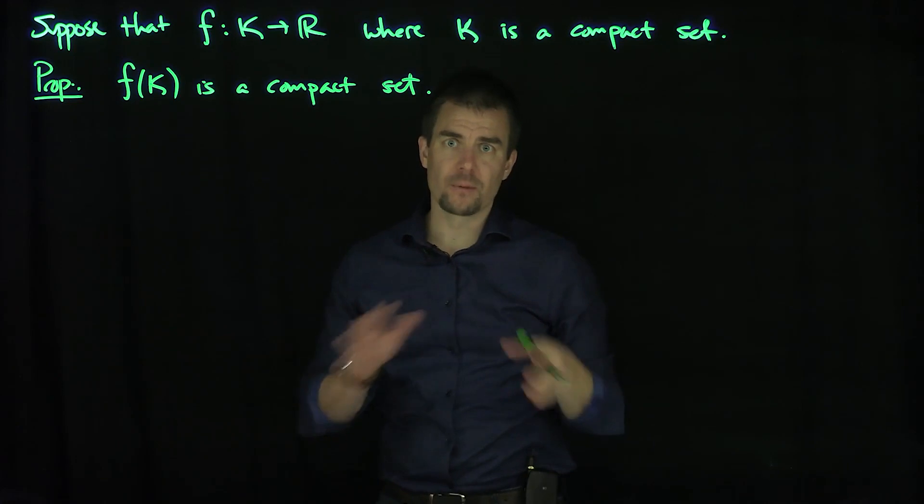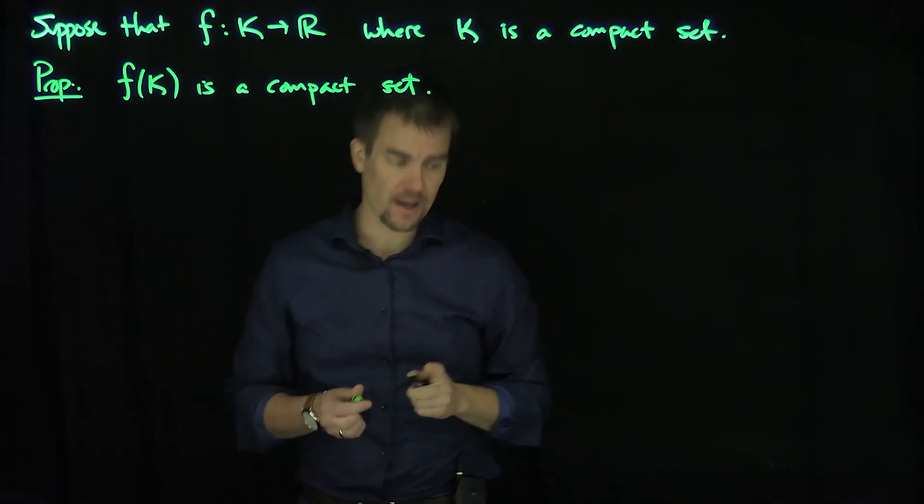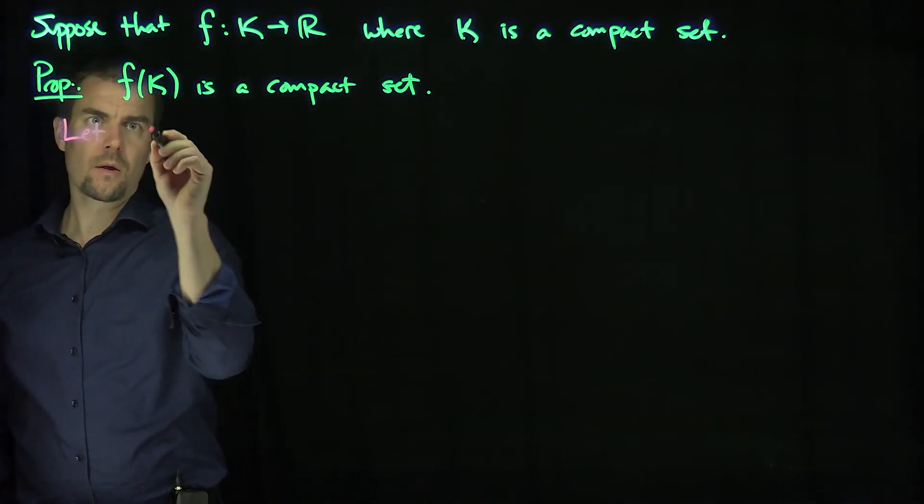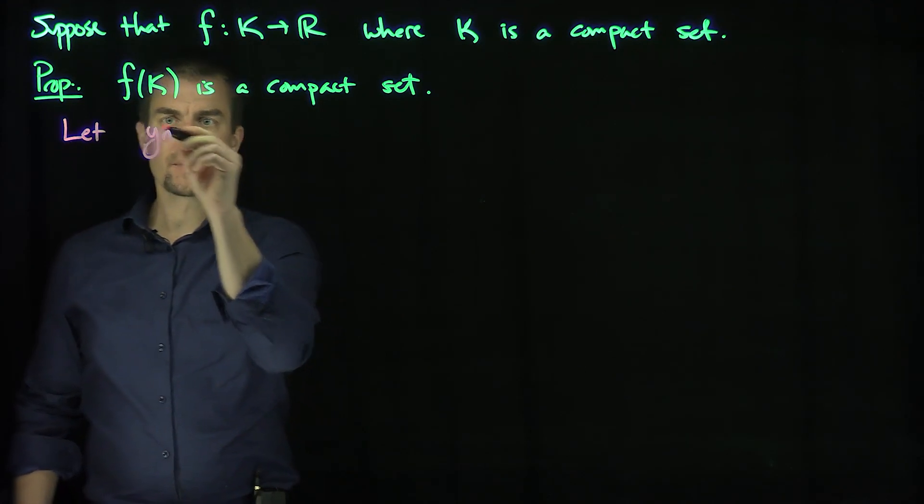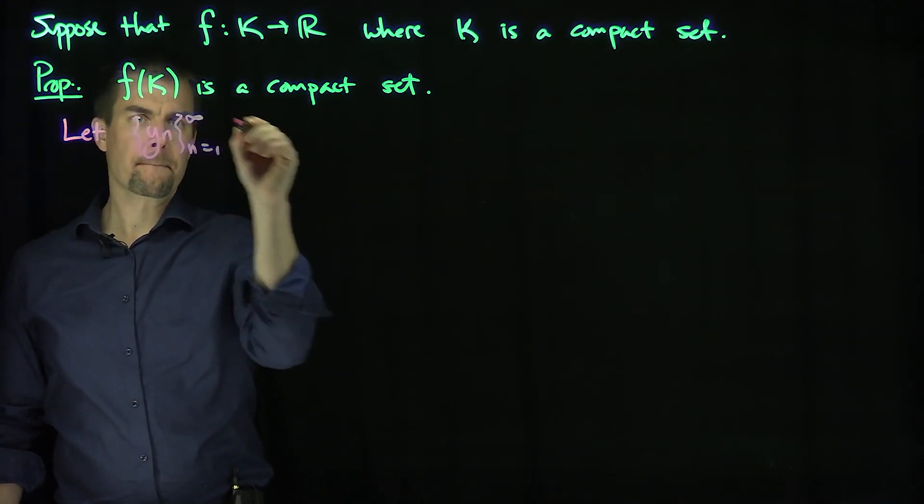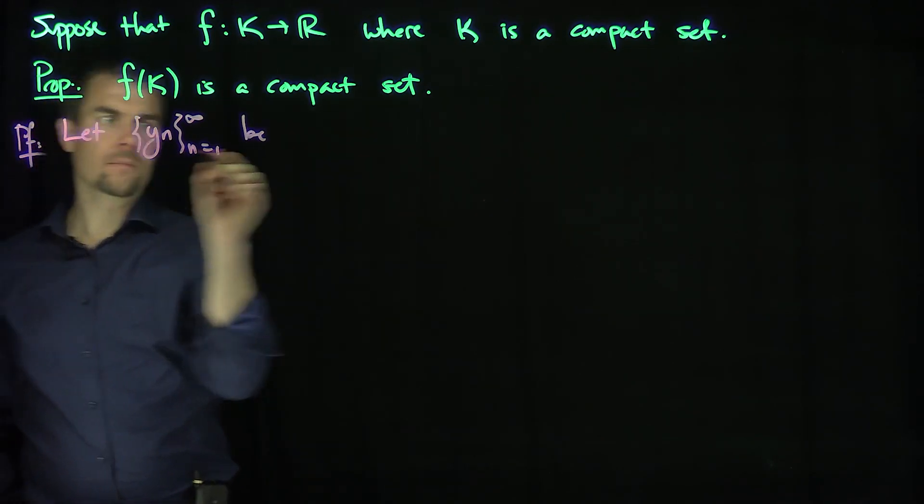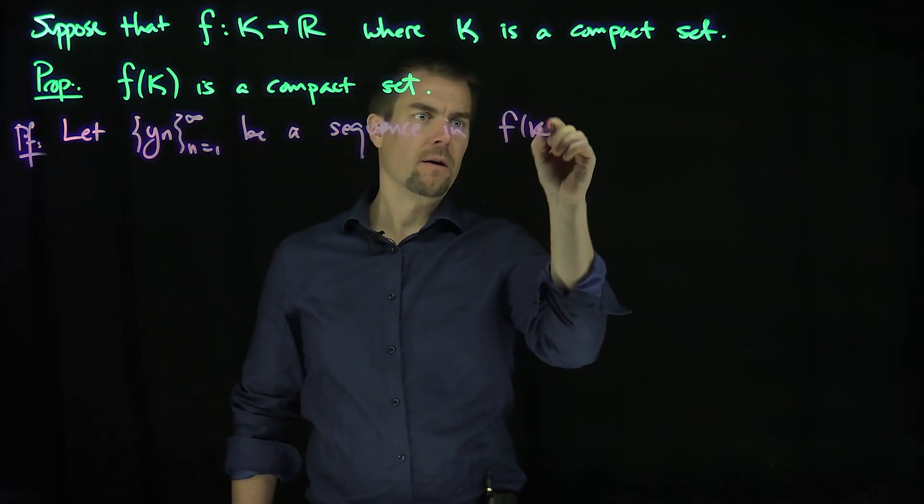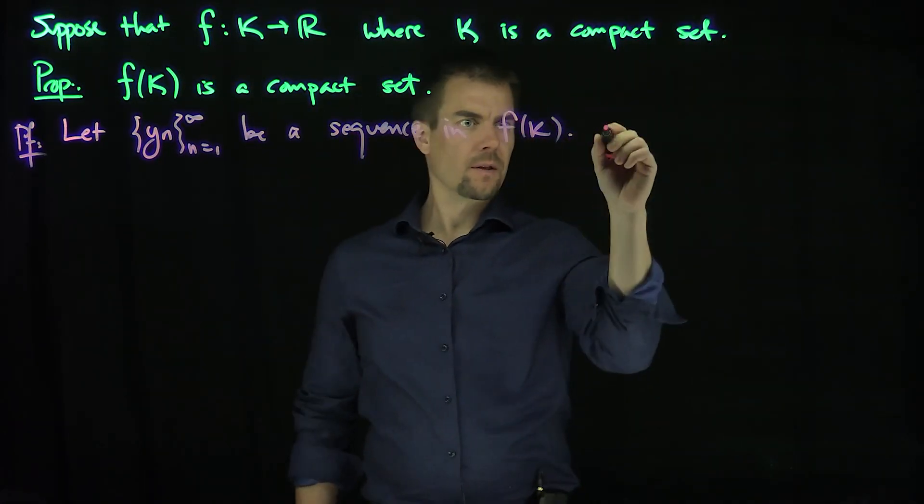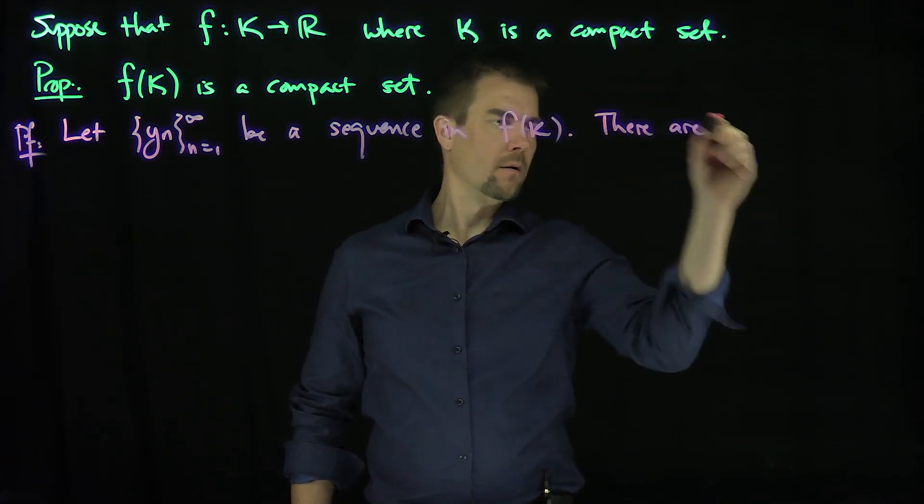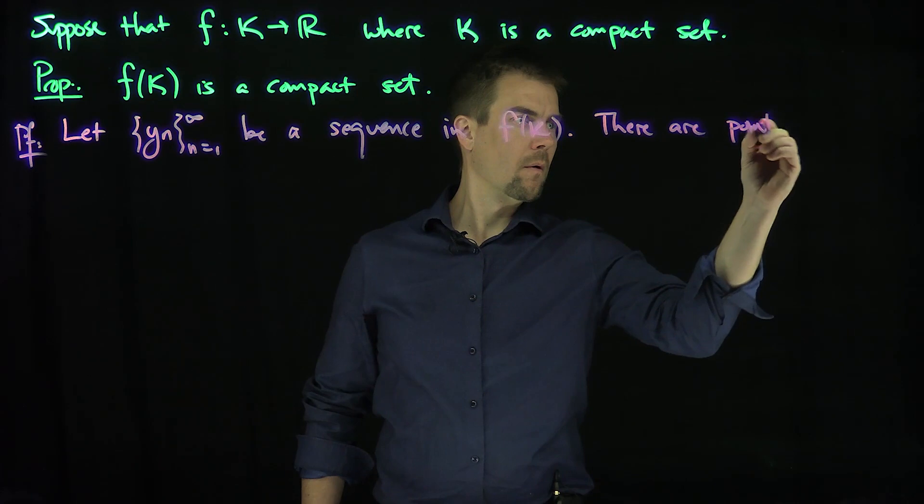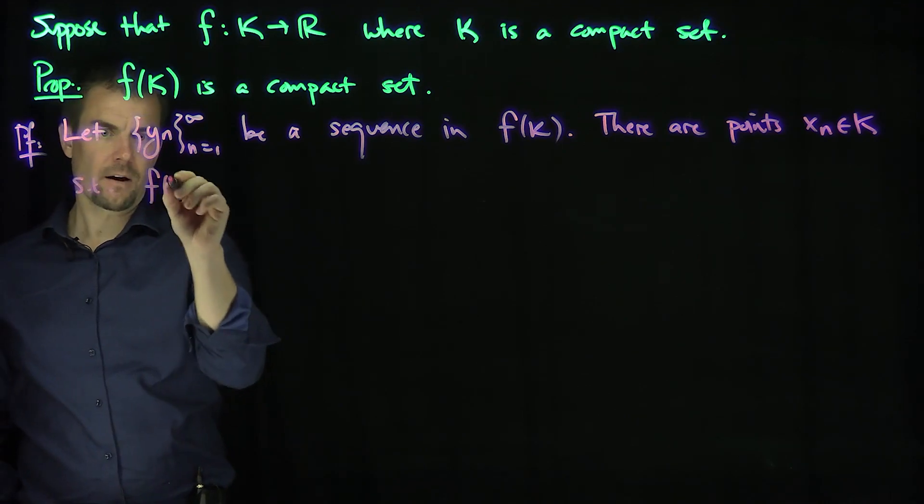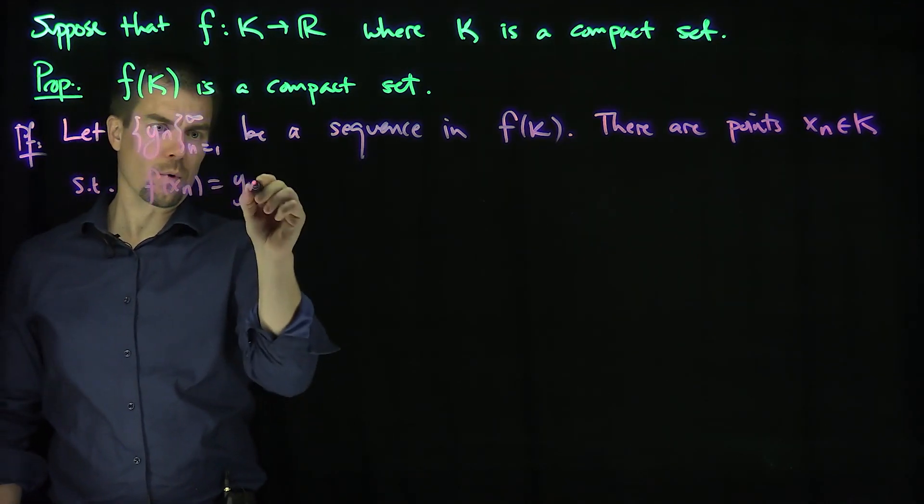This will help us prove the extreme value theorem for continuous functions on a compact set. How are we going to do this? The idea is the following. We let y_n be a sequence in the image f of K. Now, this means there are points x_n in K such that f of x_n is equal to y_n.